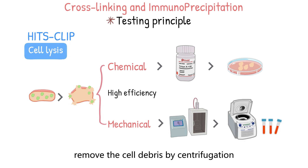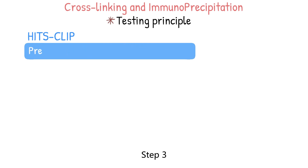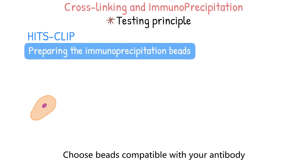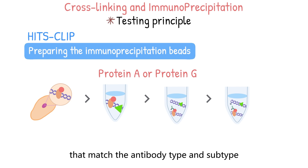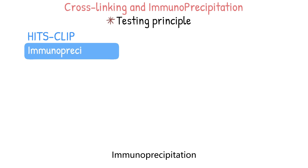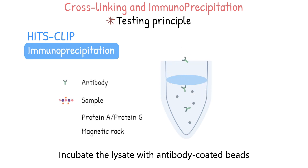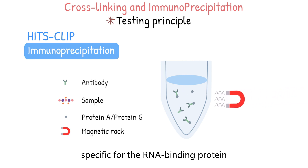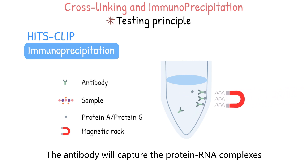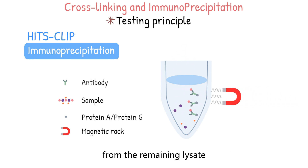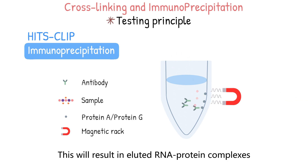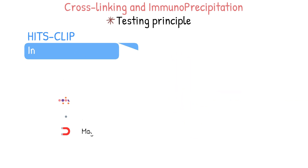Then, remove the cell debris by centrifugation and collect the supernatant. Step 3: Preparing the immunoprecipitation beads. Choose beads compatible with your antibody, such as protein A or protein G magnetic beads that match the antibody type and subtype. Step 4: Immunoprecipitation. Incubate the lysate with antibody-coated beads specific for the RNA-binding protein. The antibody will capture the protein-RNA complexes, and the beads will make these complexes easier to separate from the remaining lysate, resulting in eluted RNA-protein complexes.